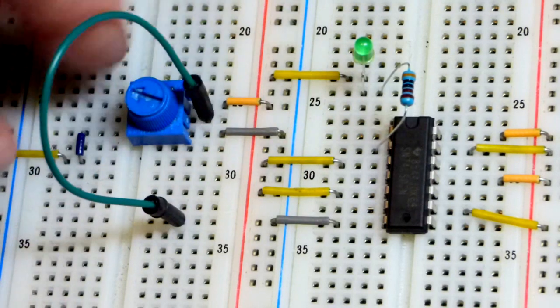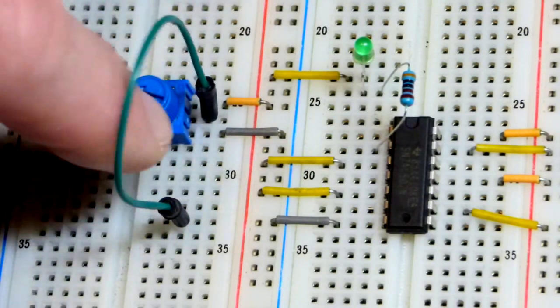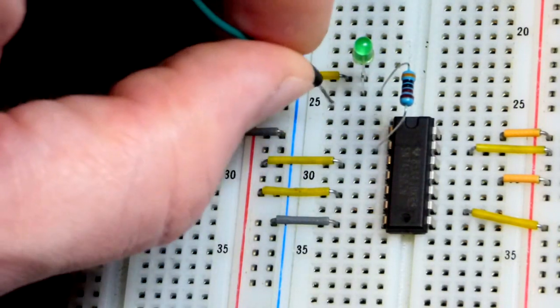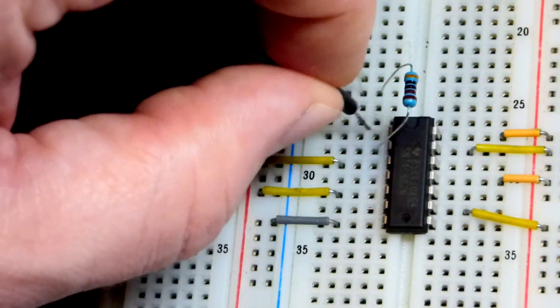We've got the trim pot. It's a resistor. There's a tap on there, a wiper. You can get a fraction of the power supply voltage. That's what a voltage divider is. That goes to the top pin, the input.